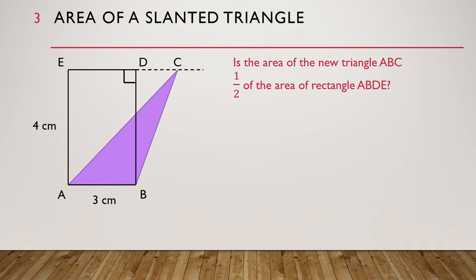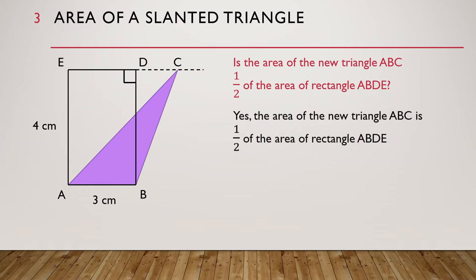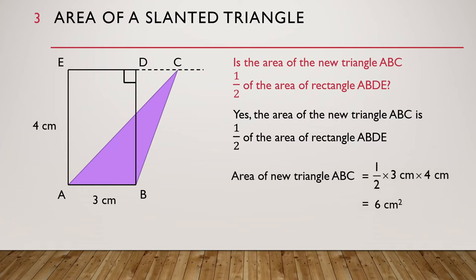So, the answer to the question is yes — the area of the new triangle ABC is half of the area of rectangle ABDE. Therefore, the area of the new triangle ABC is equal to half times 3 cm times 4 cm, which is equal to 6 cm².